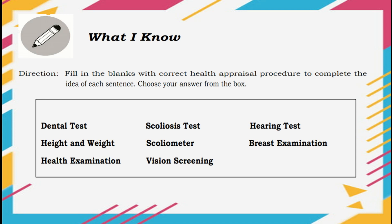What I Know. Direction: Fill in the blanks with the correct health appraisal procedure to complete the idea of each sentence. Choose your answer from the box: dental tests, height and weight, health examination, scoliosis test, sconiometer, vision screening, hearing test, and breast examination.